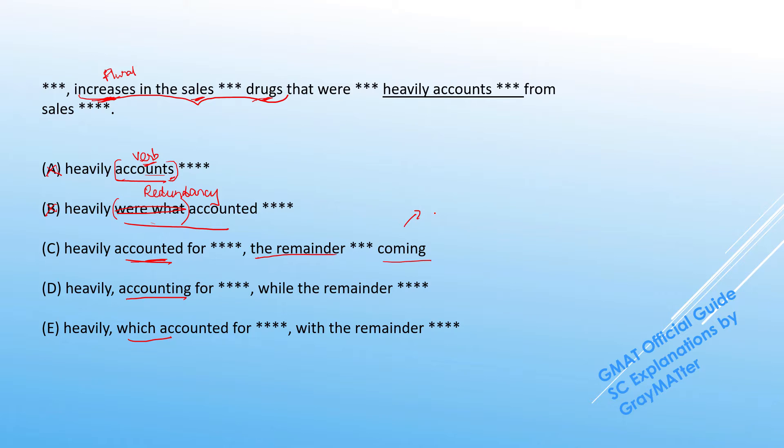Now this is the concept of an absolute modifier, because we have a noun plus a noun modifier here. So we have 'the remainder'—the noun—and 'coming,' which is the present participle modifier for the noun 'remainder' itself. And this whole thing becomes an absolute modifier construction.